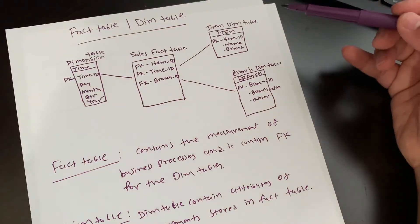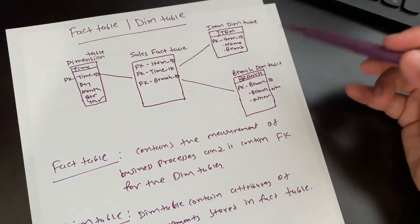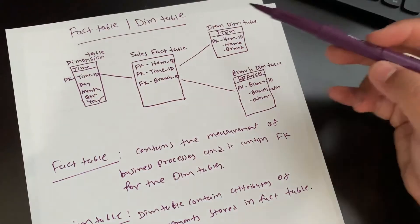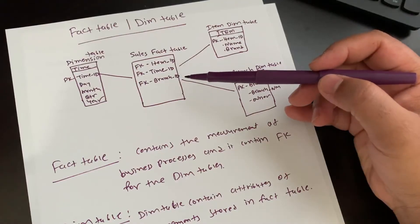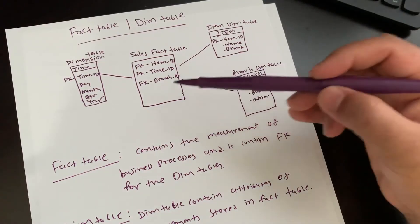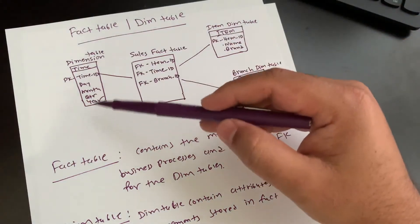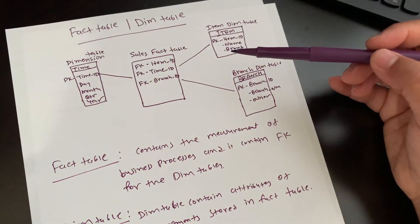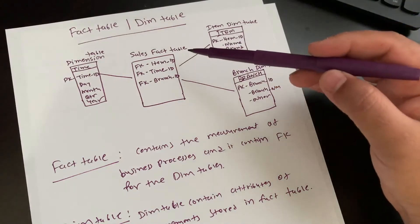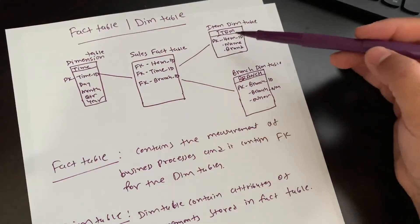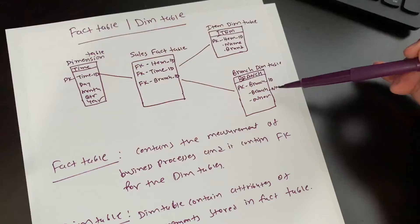Let's look at some more detail about fact and dimension tables. The fact table mainly consists of business facts and foreign keys that refer to primary keys in the dimension tables. The dimension table consists of many descriptive attributes that are textual fields, like name, brand name, owner name, and branch name.